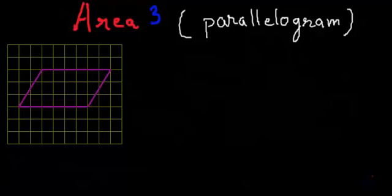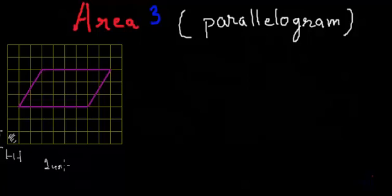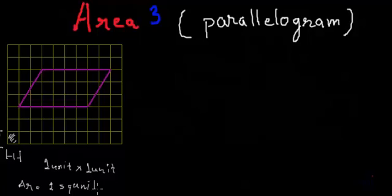Hi, in today's video we will learn how to calculate the area of a parallelogram. I have drawn one grid which is a collection of tiny squares, where each square is of the dimension one unit by one unit. This tiny square is of the dimension one unit by one unit and its area is one square unit. This is a square of unit dimension and that is why its area is called one square unit.